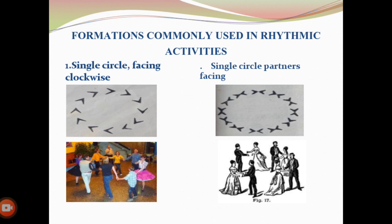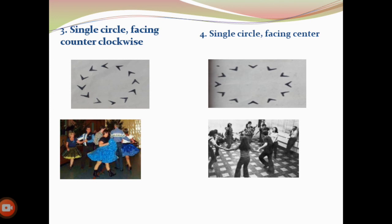Formations Commonly Used in Rhythmic Activities. Single Circle Facing Clockwise: partners are side by side facing the same direction, arranged in a single circle with both dancers facing in or out. Single Circle Partners Facing: all dancers form a circle facing in the dance floor, usually with hands joined, with or without partners. Single Circle Facing Counter-Clockwise: couples facing the line of direction counterclockwise, gentlemen on the inside.